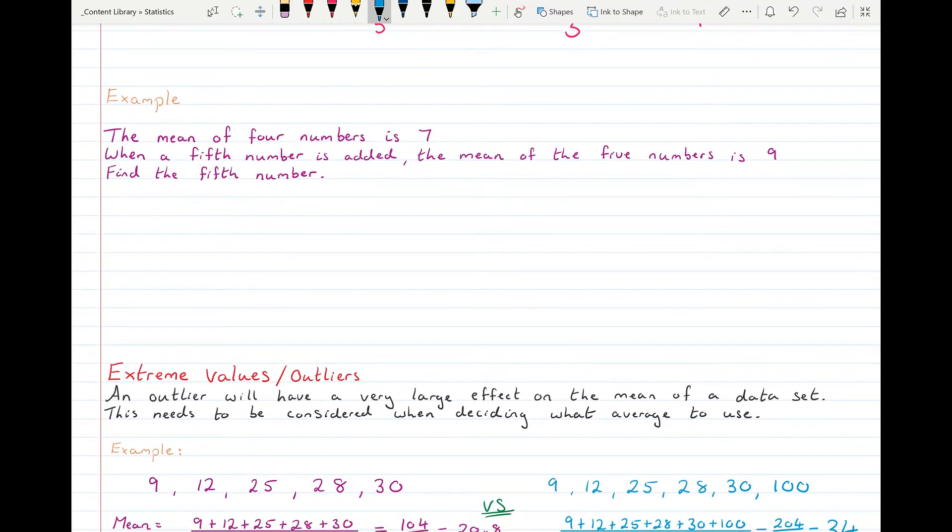A second example then, where they tell us the mean, that the mean of four numbers is seven. When a fifth number is added, the mean of the five numbers is nine. Find the fifth number. Okay, so mean of four numbers equals seven. So how we found the mean was we added up all the numbers and we divided by however many numbers there were.